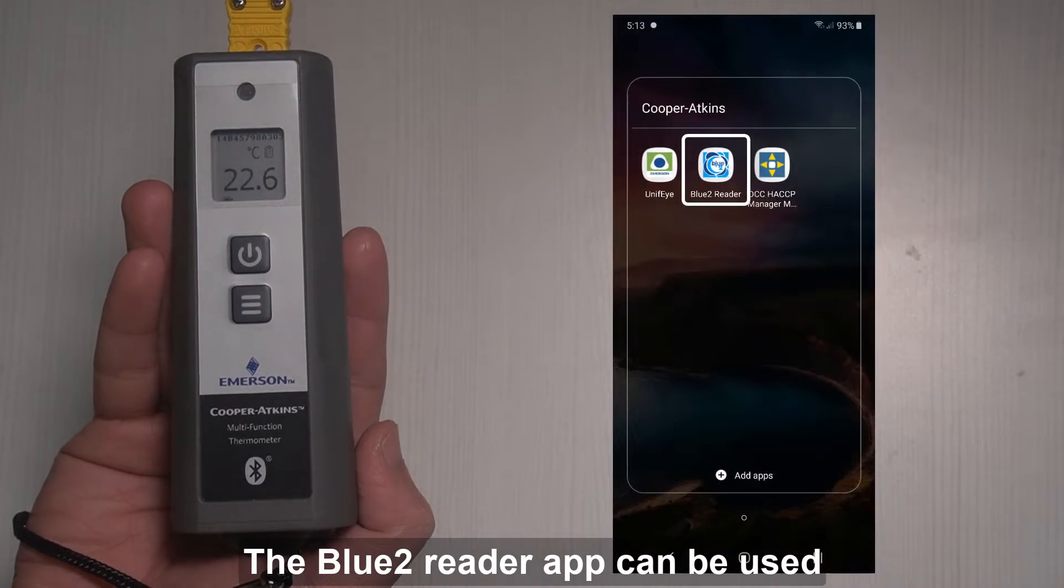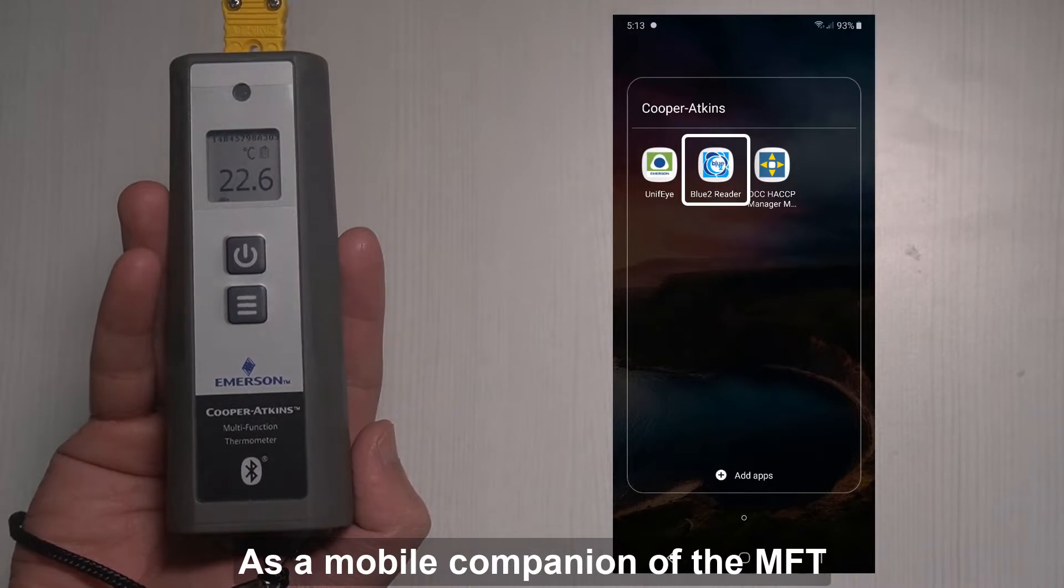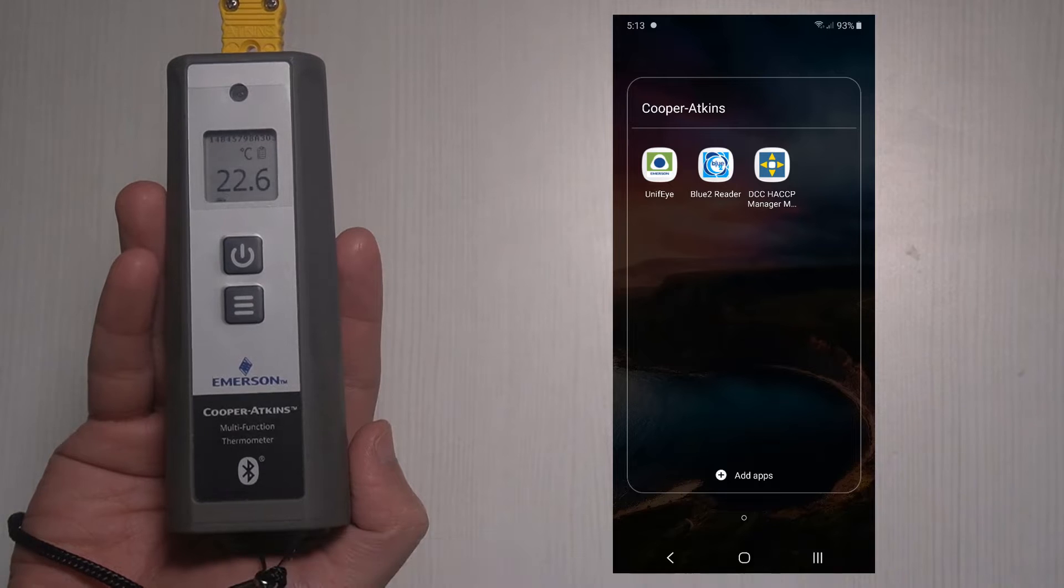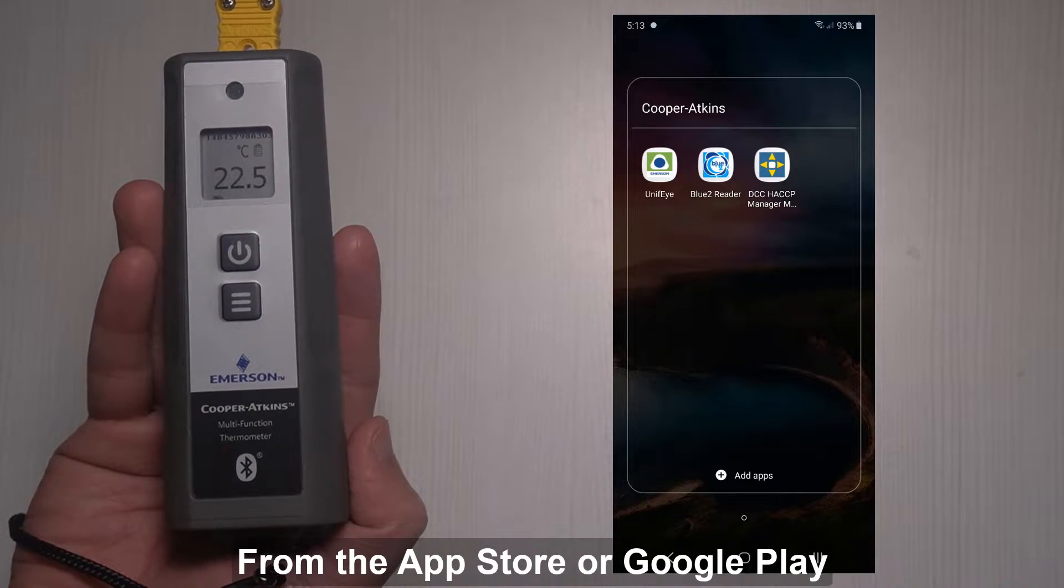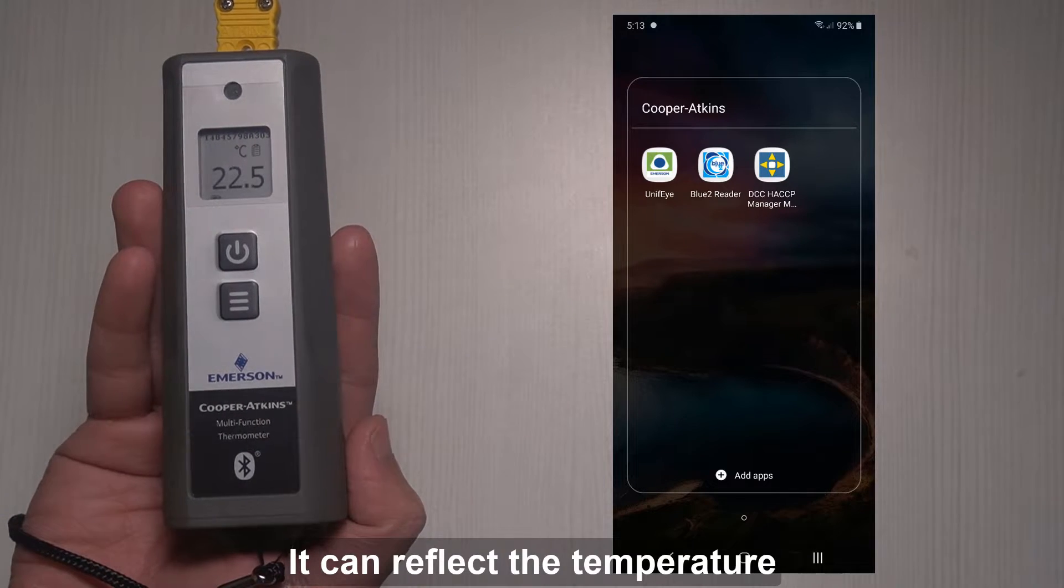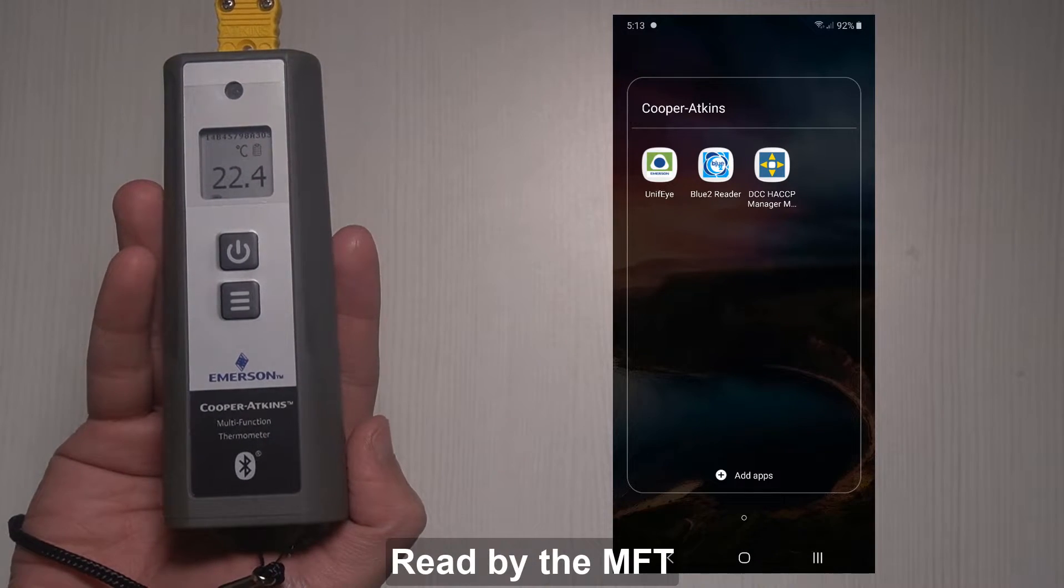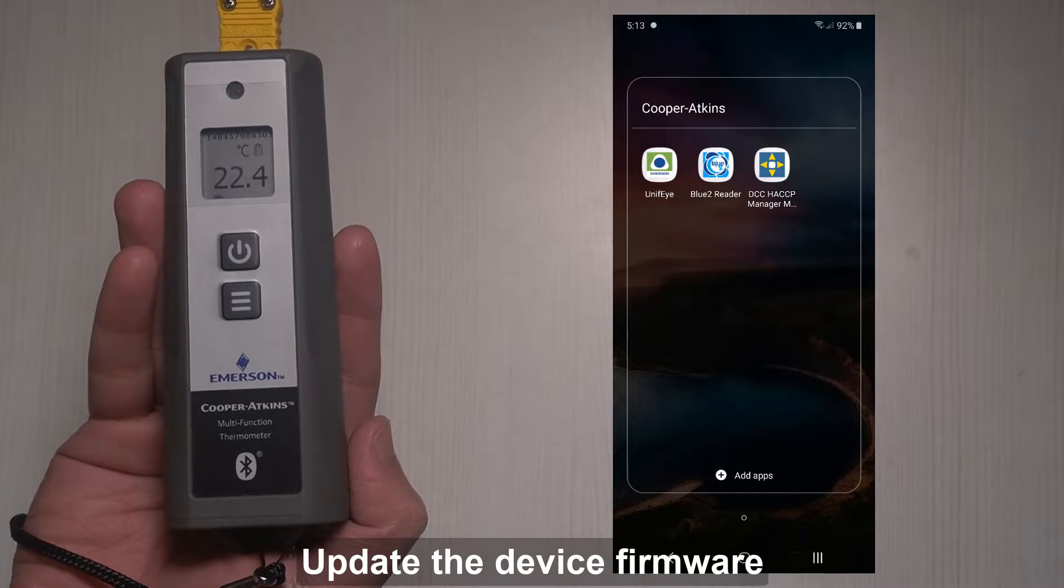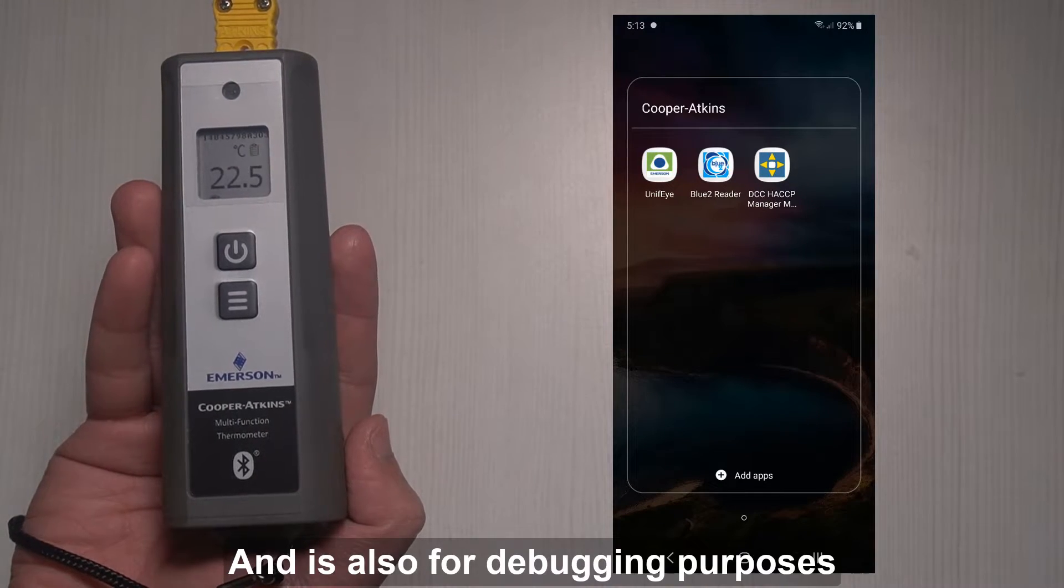The Bluetooth Reader app can be used as a mobile companion of the MFT. This app is available for download from the App Store or Google Play. It can reflect the temperature read by the MFT, update the device firmware, and is also for debugging purposes.